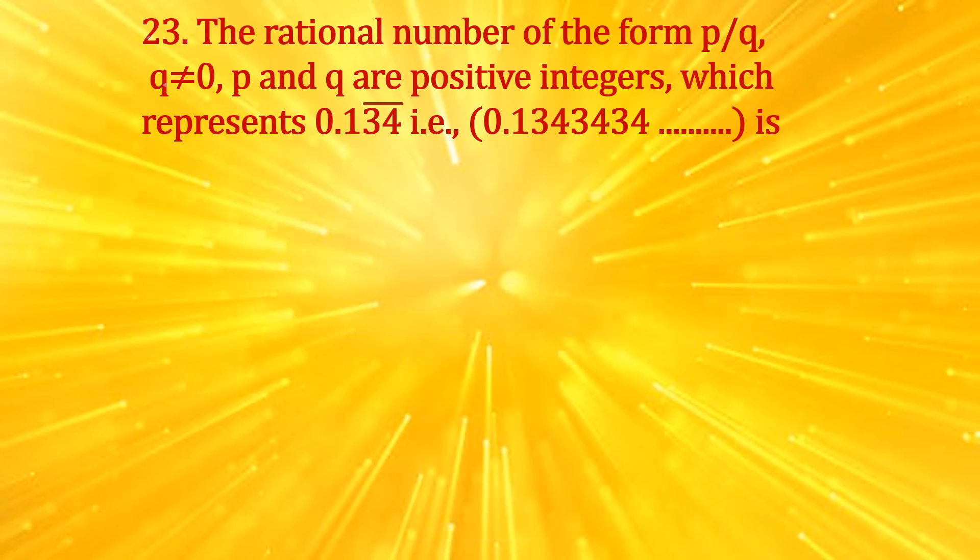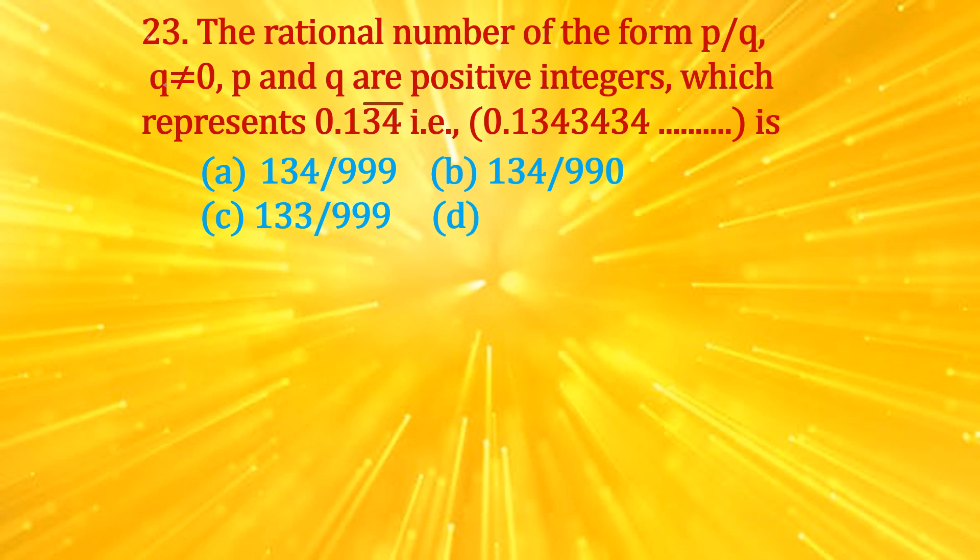The rational number of the form p/q, where q≠0, p and q are positive integers, which represents 0.134̄ (that is 0.1343434...) is: (a) 134/999, (b) 134/990, (c) 133/999, (d) 133/990.